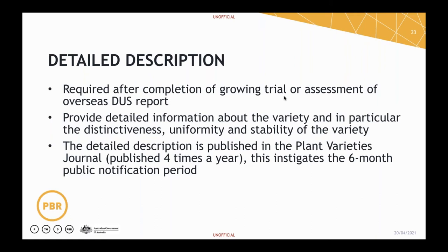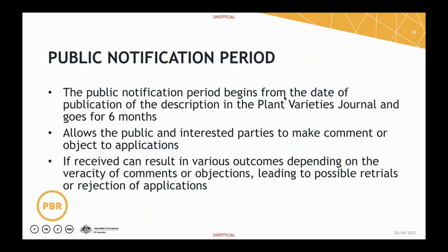Whether a variety will be assessed using an overseas report will depend on a number of factors. The point of the detailed description is to provide detailed information about the variety and in particular its distinctiveness, uniformity and stability. This is then published in the Plant Varieties Journal, which is published four times a year, roughly quarterly, and this instigates a six-month public notification period. The public notification period is really important because it's available for everyone to see — it allows the public and interested parties to make comments and possibly object about an application. It could be that there are people out there that know about something that has been missed, so it's a really good checkpoint for us to correct things.